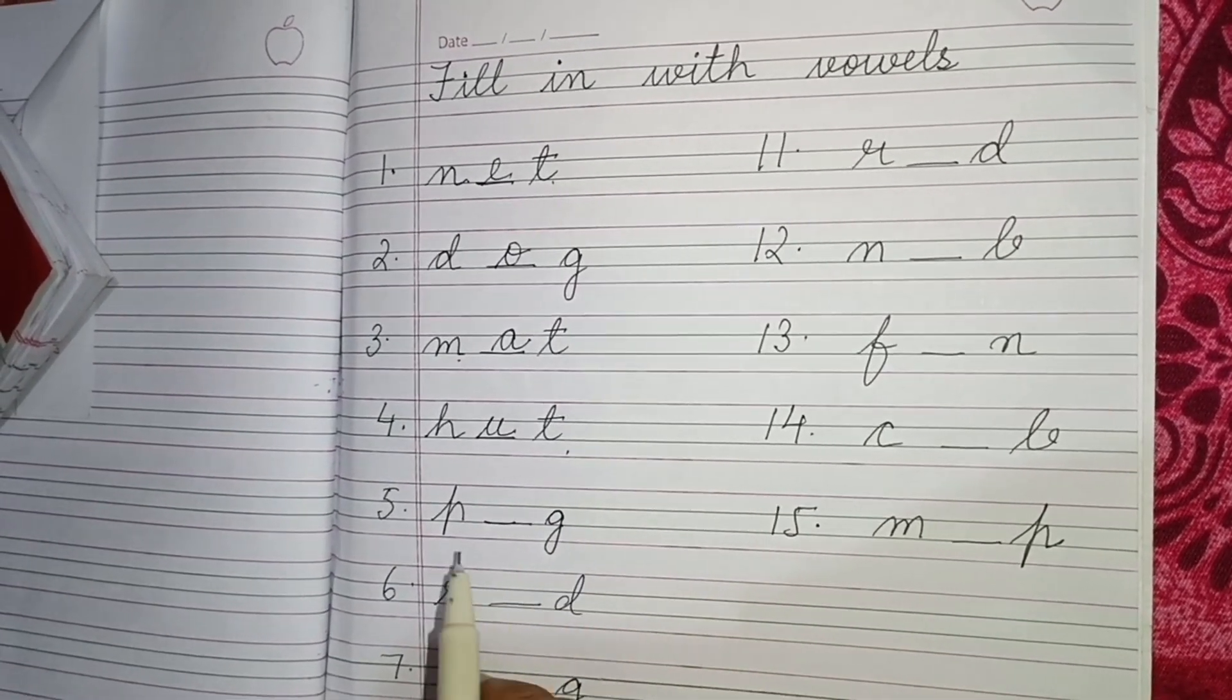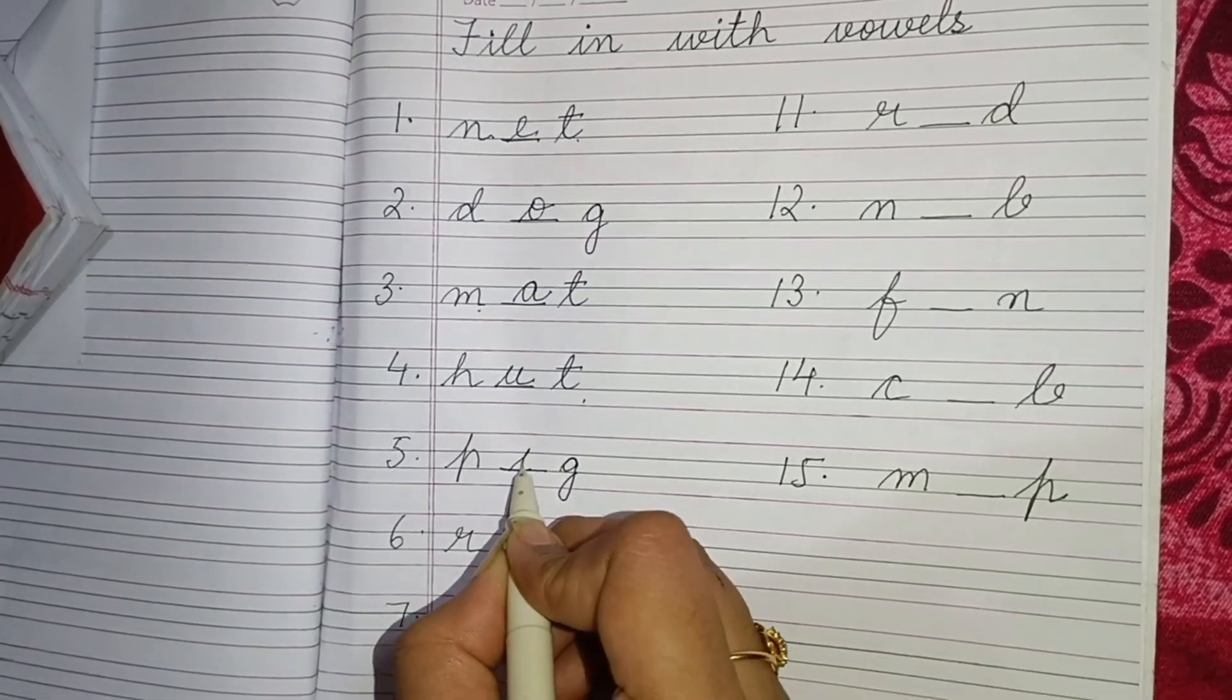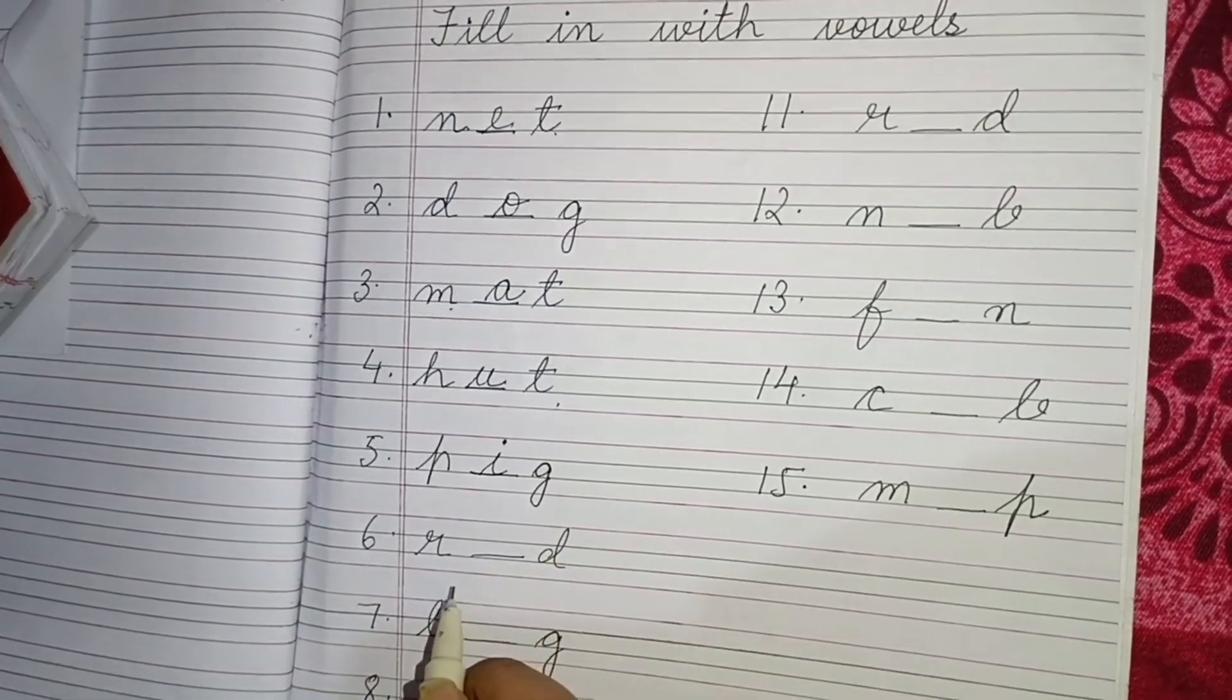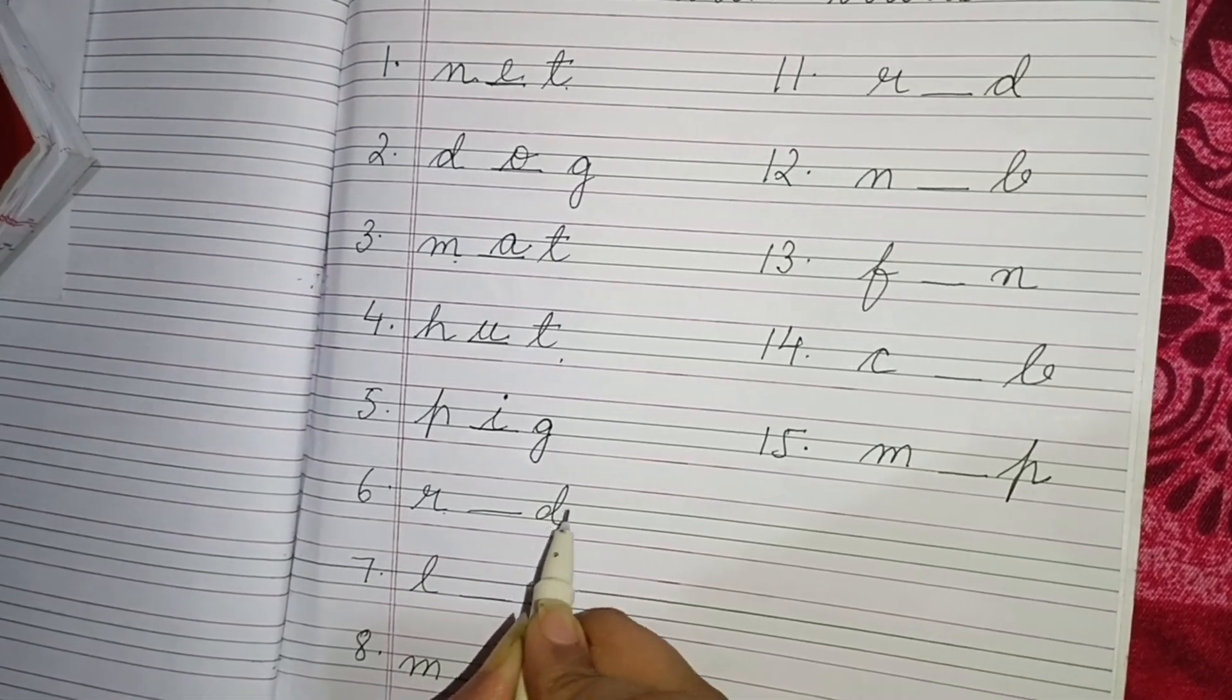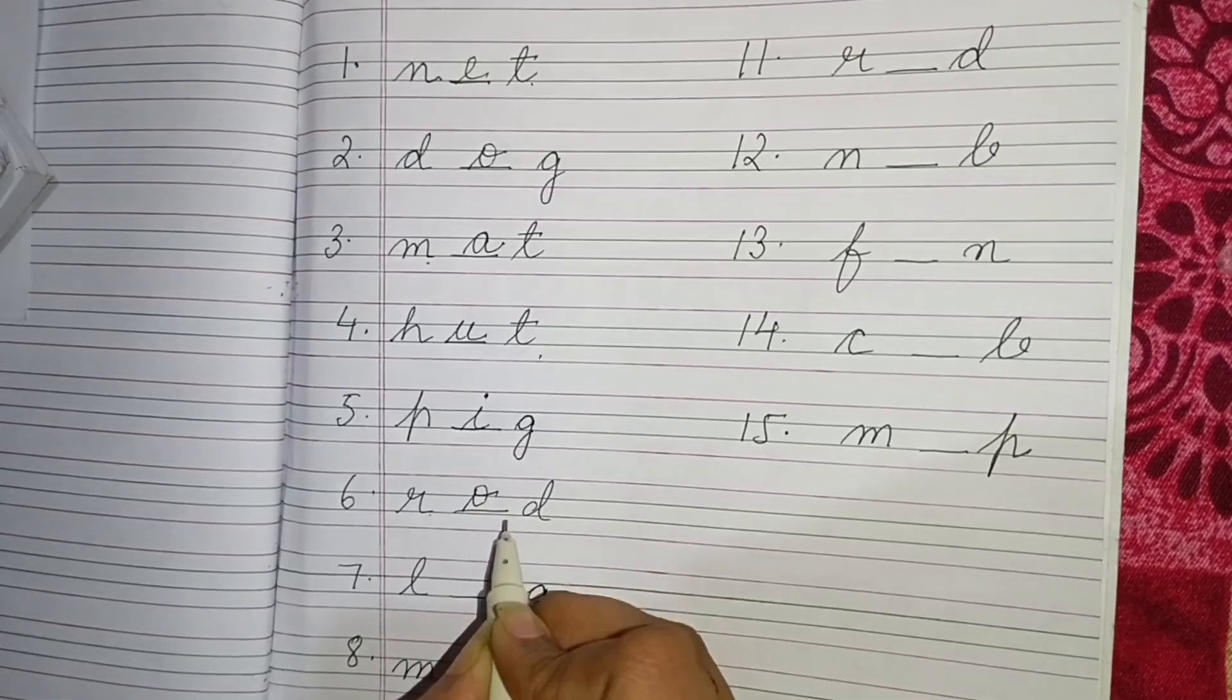Next is P blank G. So it will be P I G, pig. Then it is R blank D. So here it will be R O D, rod.